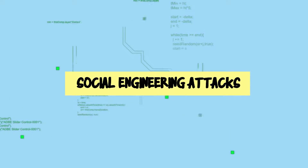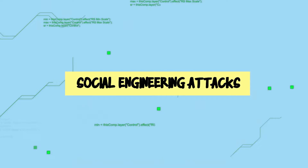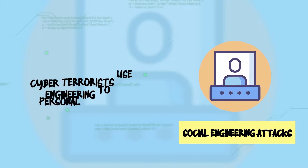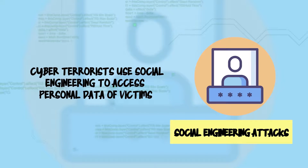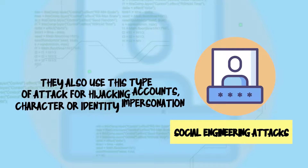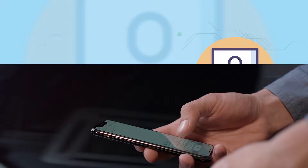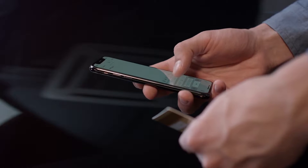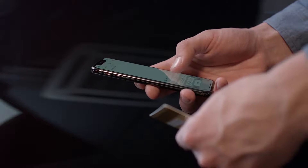Number five: social engineering attacks. Cyber terrorists use social engineering to access personal data of victims. They also use this type of attack for hijacking accounts, character or identity impersonation, or to perform unauthorized payments and more.